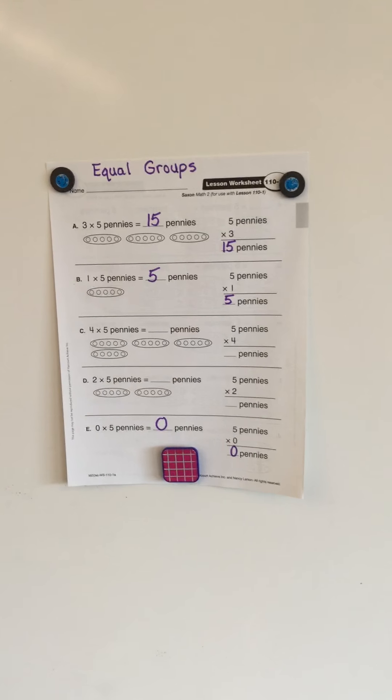So, here you see three groups of five pennies. Three times five equals fifteen pennies. Or we can say five pennies times three groups is fifteen pennies. And the next one, one group of five pennies equals five pennies. Five pennies times one group is five.